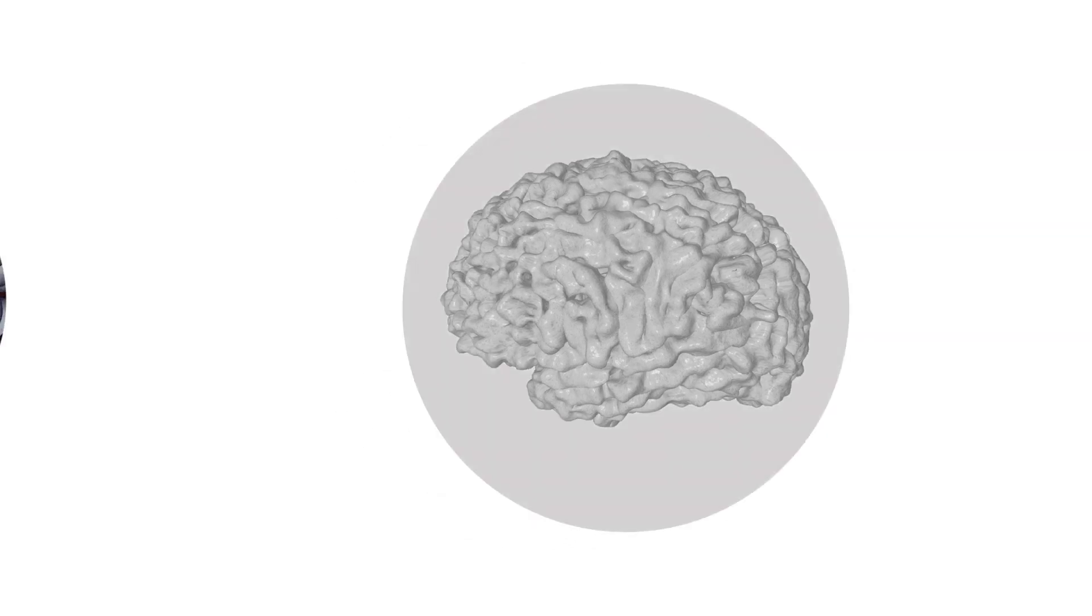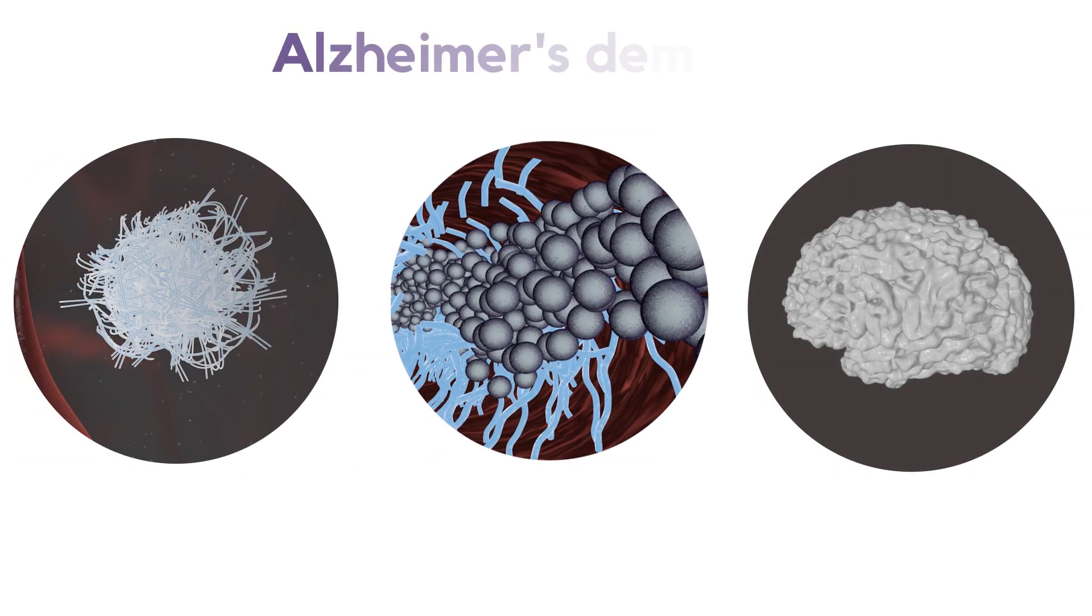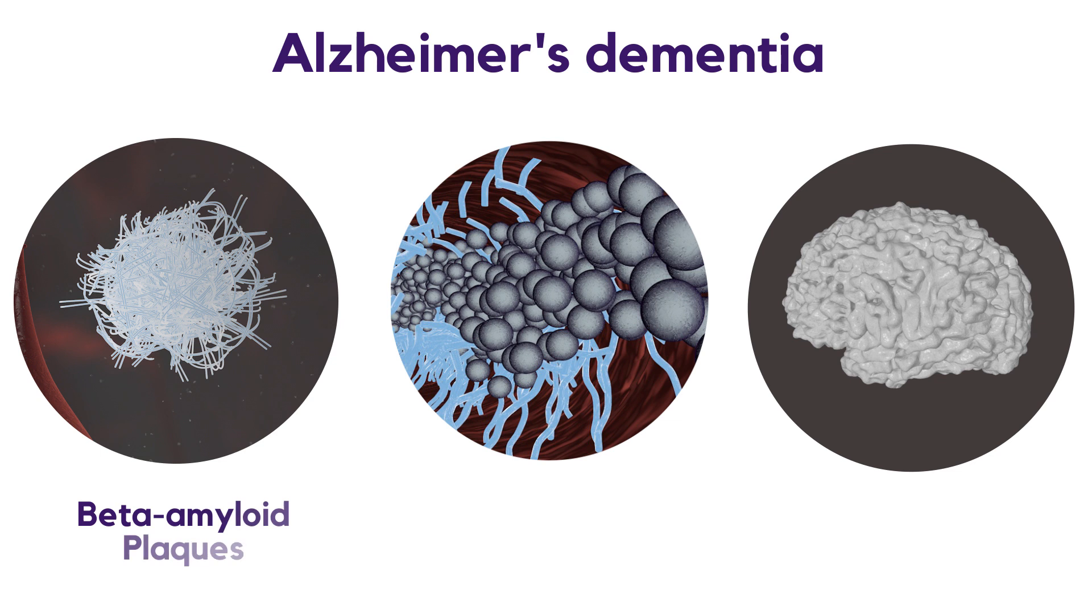So these are the three hallmark processes involved in Alzheimer's dementia: beta-amyloid plaques, tau tangles, and brain shrinkage.